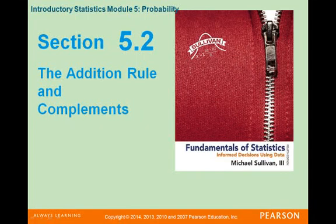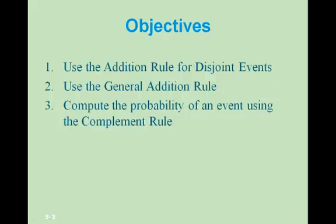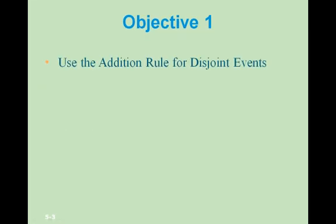Section 5.2: the addition rule and complements. We will look at three objectives in this section. Objective 1: use the addition rule for disjoint events.